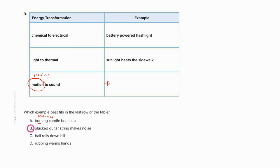Here we have plucked guitar. That is when you move the string and it makes a noise. A noise is a sound. Here we have the ball roll down a hill. So we had potential energy in a ball that went down the hill and it became moving energy. Here we have rubbing warm hands. That is moving to warm thermal.